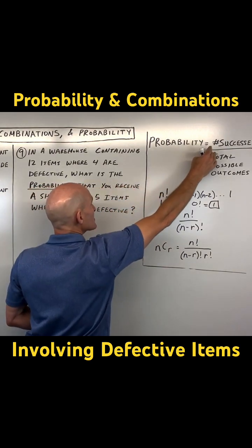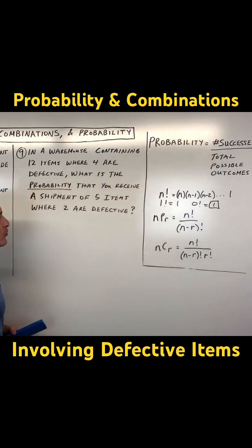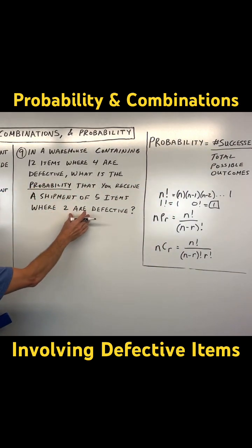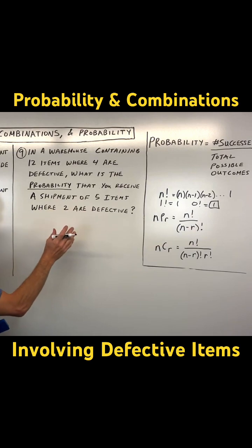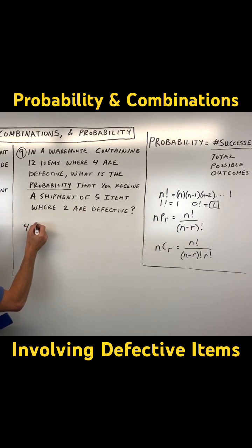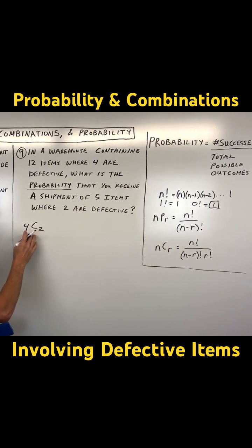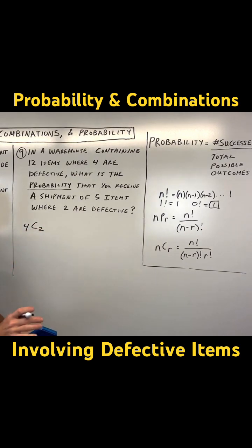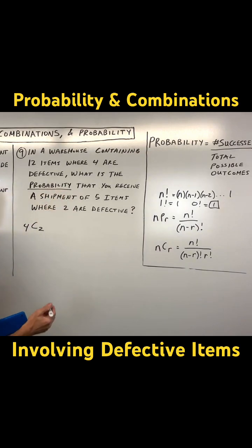Remember, that's the number of successes over the total possible. And what we're looking for is that two are defective. So out of the four defective items at this warehouse, how many ways are there to get two? Now we're using combinations because it doesn't matter the order. We're assuming these are all the same kind of widget.